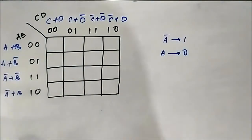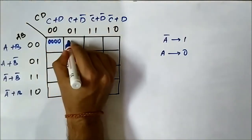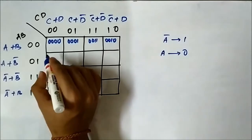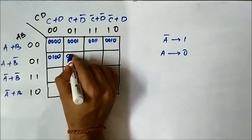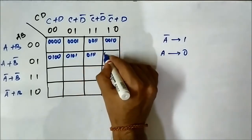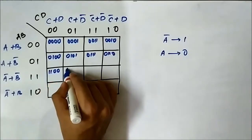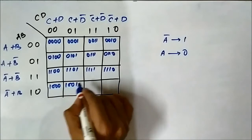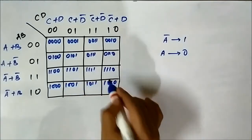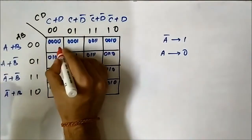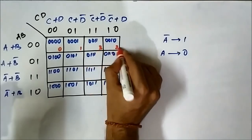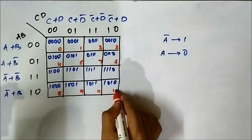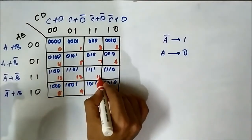Each of these cells will have a particular decimal value. Like we do in the SOP KMAP, we assign the values 0, 1, 3, 2, then 4, 5, 7, 6, then 8, 9, 11, 10, then 12, 13, 15, 14 — the decimal values corresponding to each cell.